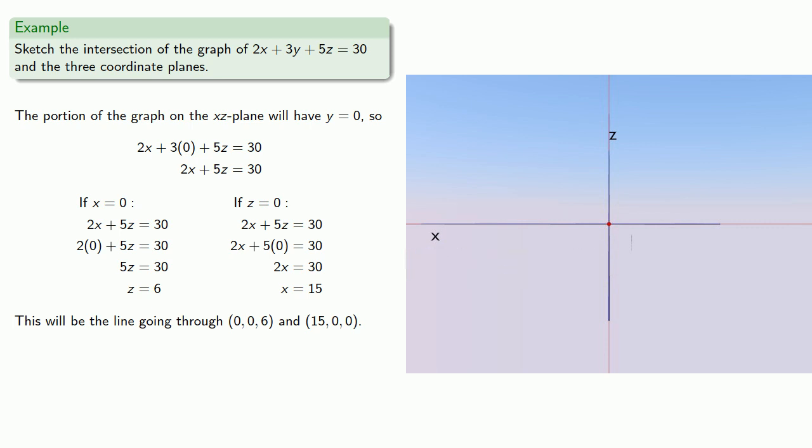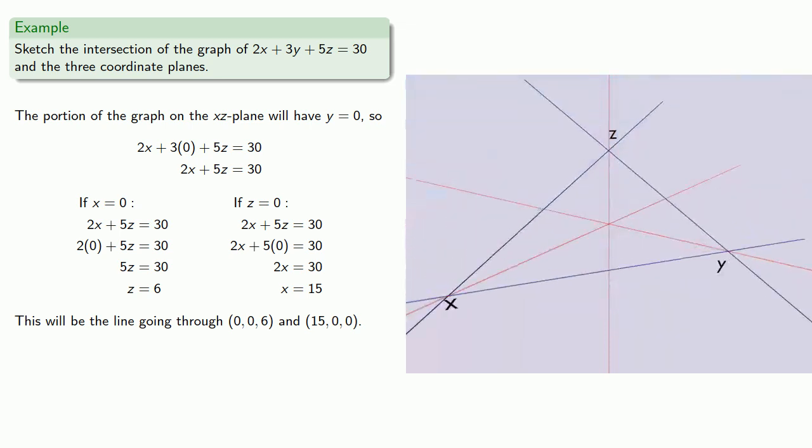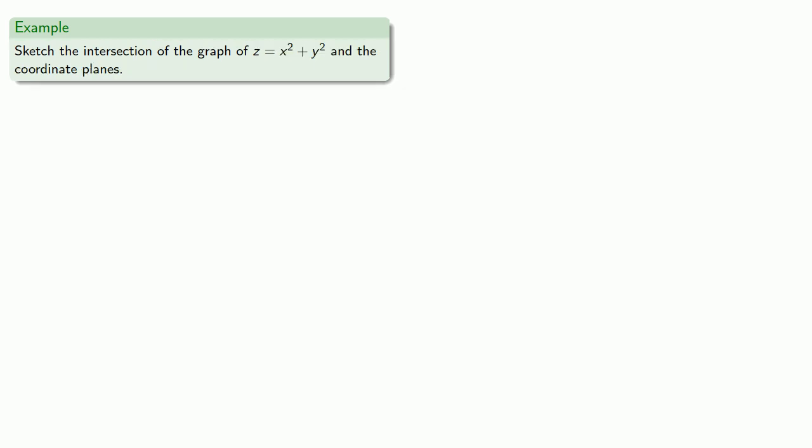So when we graph this point 15, 0, 0, it's actually to the left of the origin. And our line will look like this. Let's see what this looks like in three dimensions.